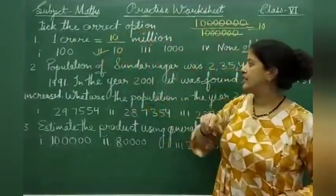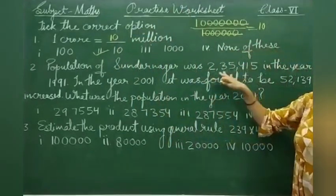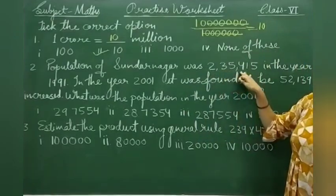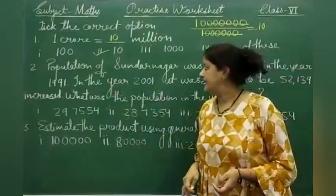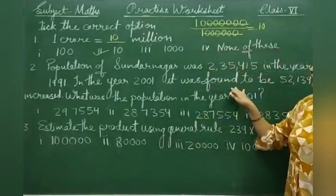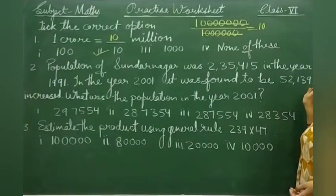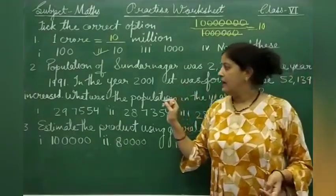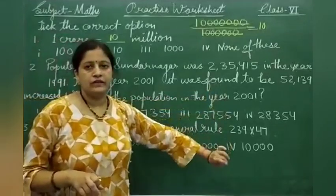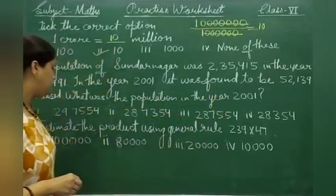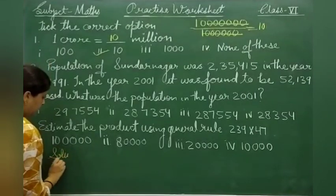Question number 2: The population of Sundar Nagar was 2,35,450 in the year 1991. In the year 2001, it was found to be 52,139 increased. What was the population in the year 2001? You can solve this.